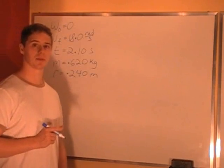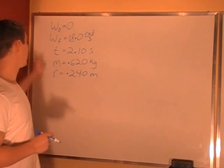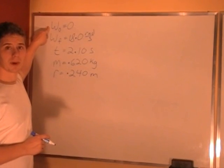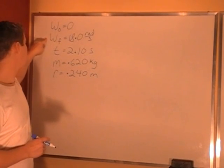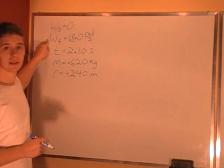A basketball player is spinning a basketball on his finger. We know that he starts off with the basketball at rest and he spins it up to an angular velocity of 18 radians per second.